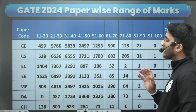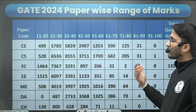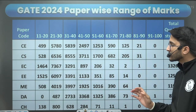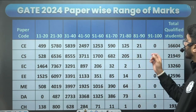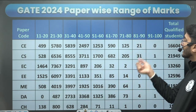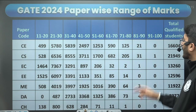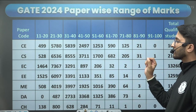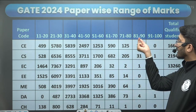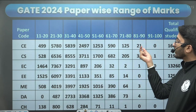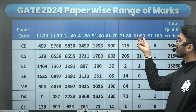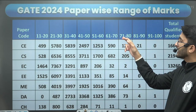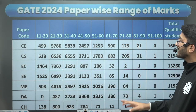First of all, you need to understand the pattern of marks and the number of candidates getting those marks in the GATE 2024 paper. For civil engineering, in the range of 81 to 90, 21 students are there, and in 91 to 100, zero students are there. It means the All India Rank 1 of civil engineering is between the 81 to 90 range, with a total of 21 students between 81 to 90 marks. For 71 to 80 marks, there are 125 students.